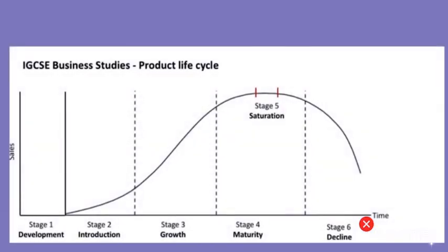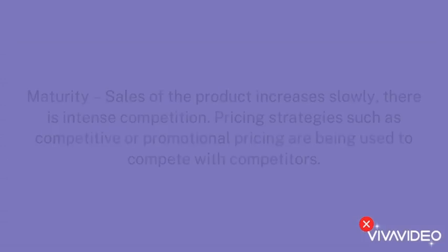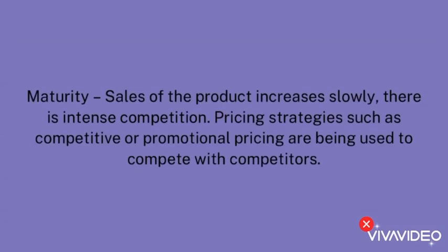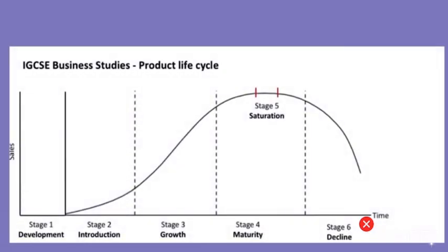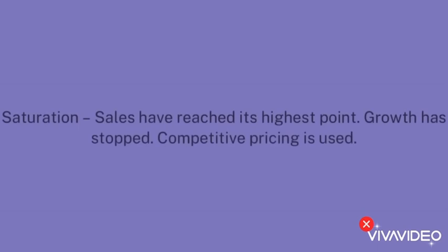Stage 4 is maturity — when the sales of the product increase slowly and there is intense competition. Pricing strategies such as competitive or promotional pricing are being used to compete with competitors. Stage 5 is saturation — when the sales have reached their highest point and growth has stopped. Competitive pricing is used during the saturation stage.